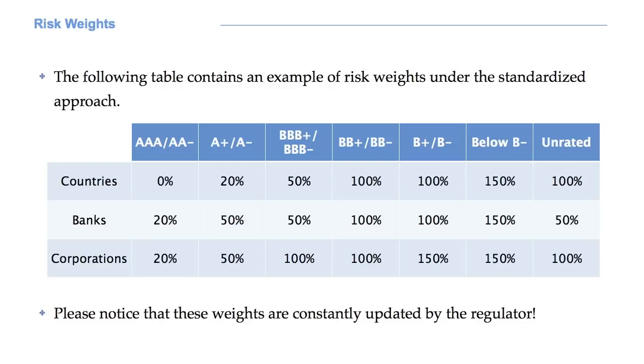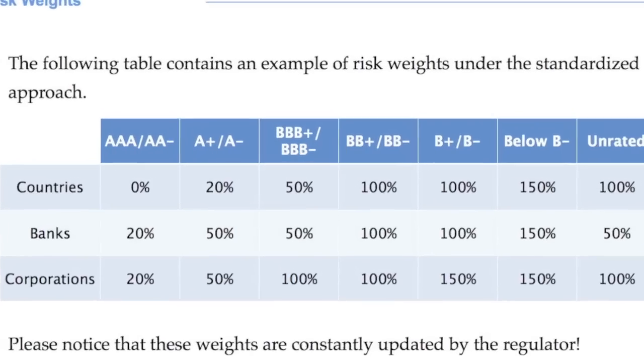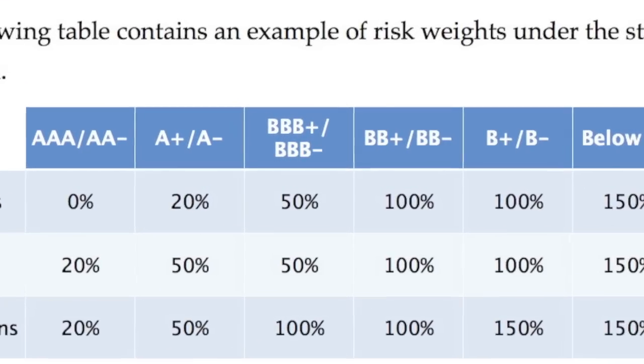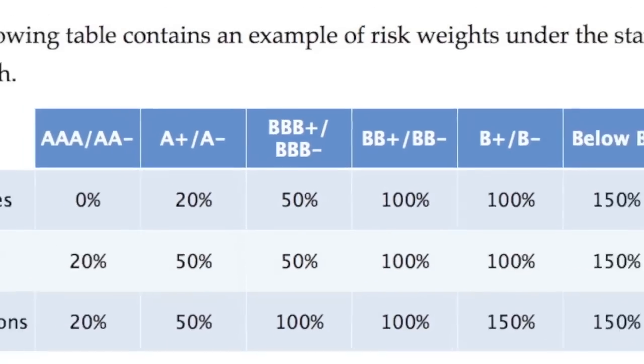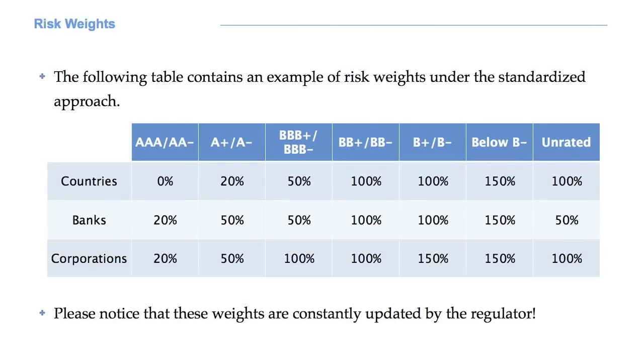I do not want you to learn them by heart, it is completely useless. What you have to understand is how to use them. Looking at the table, we see that a BBB-rated government bond has a risk weight of 50 percent or 0.5. This is the quantity we have to multiply by the principal amount. A loan to a AAA-rated corporation has a risk weight of 20 percent, and so on.